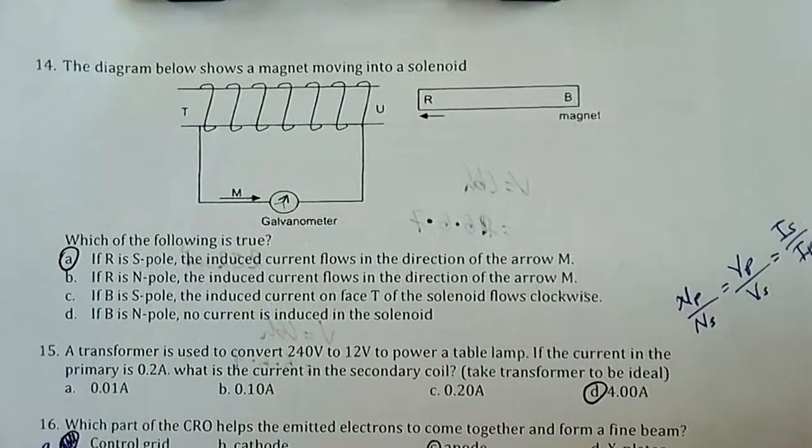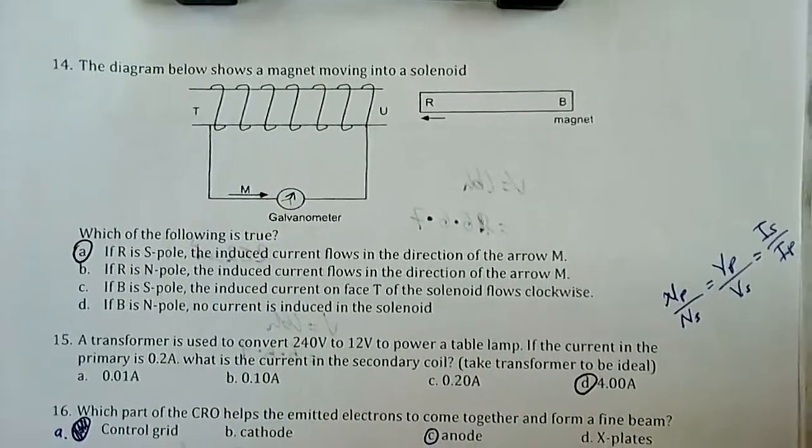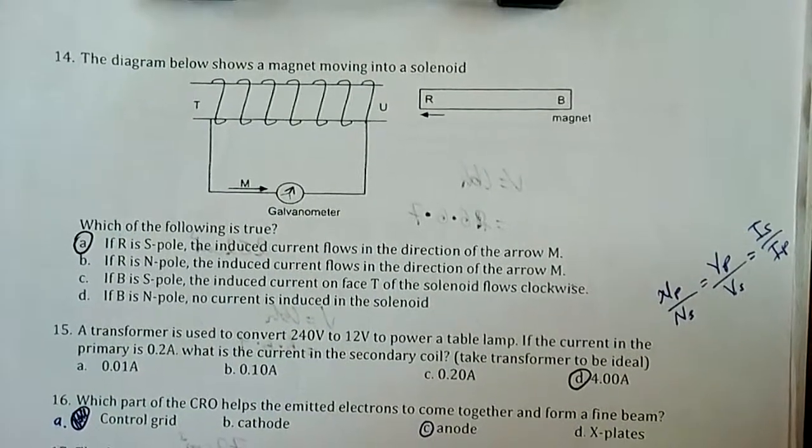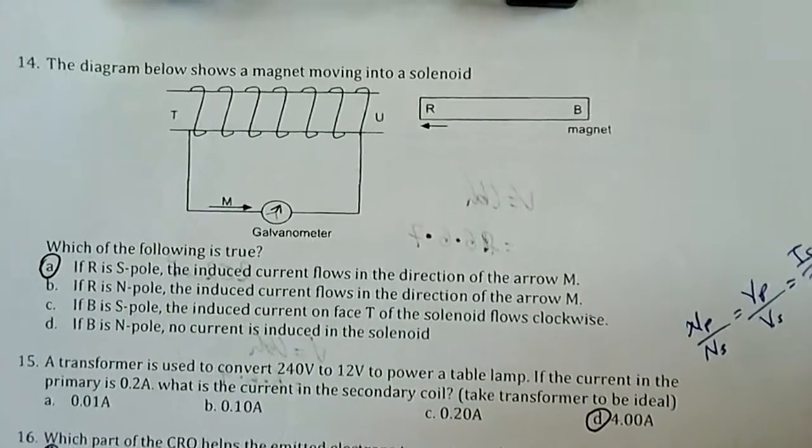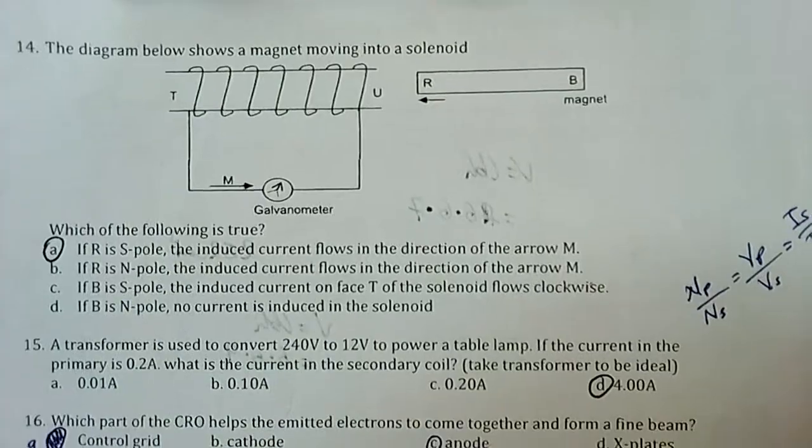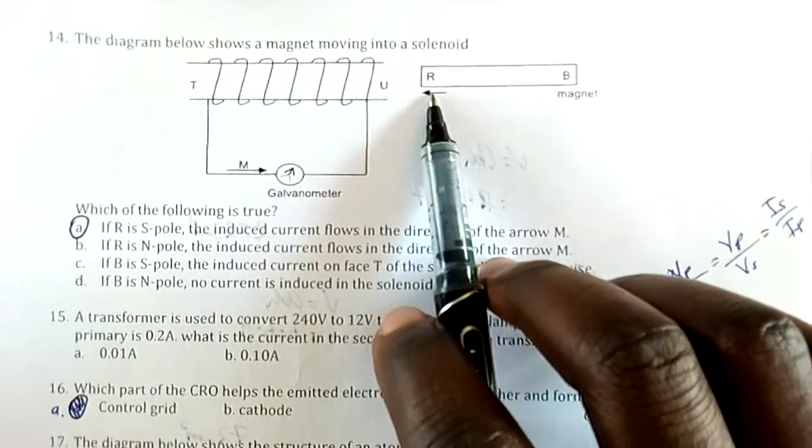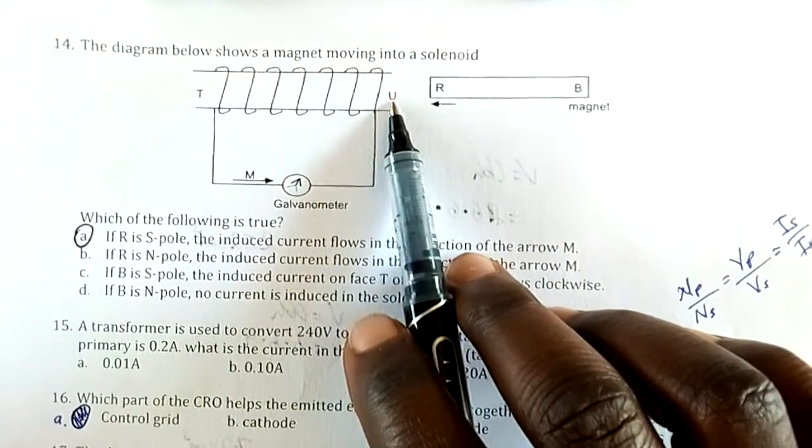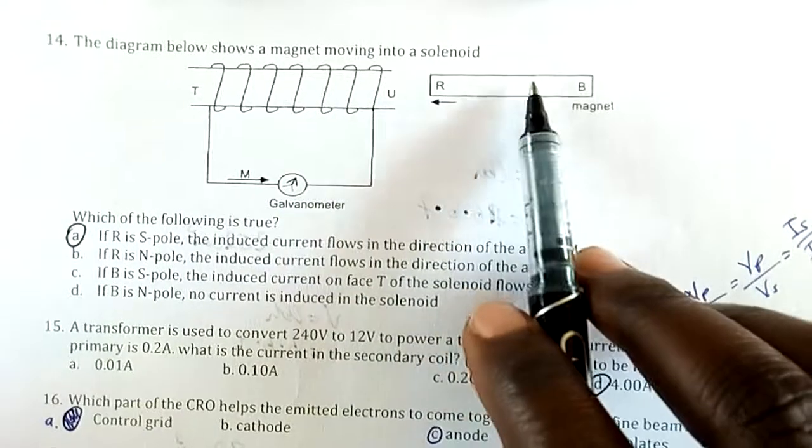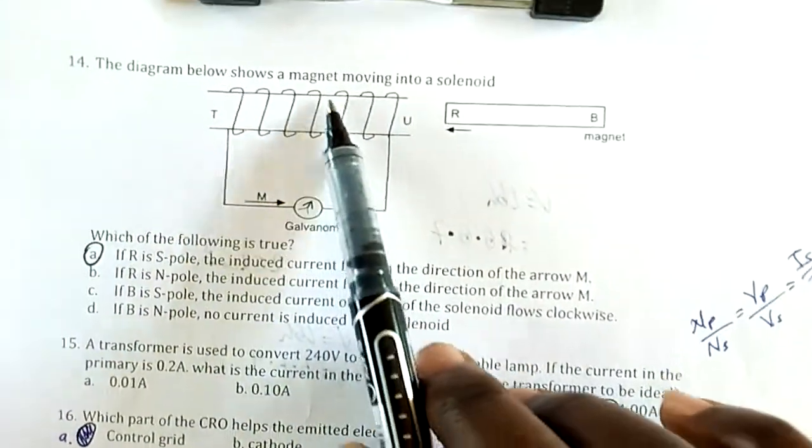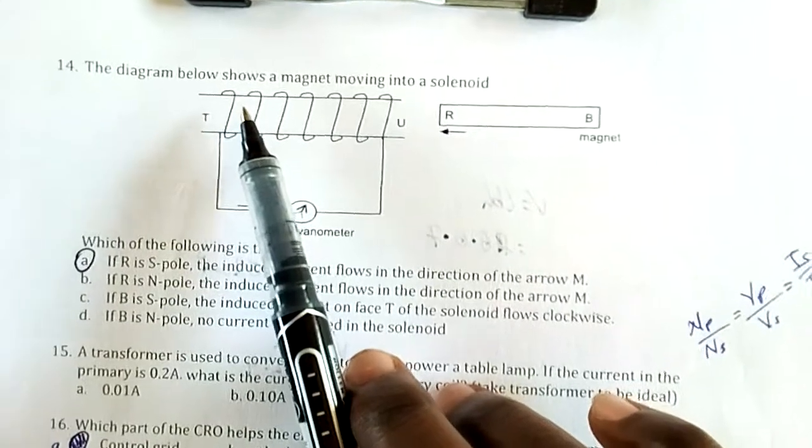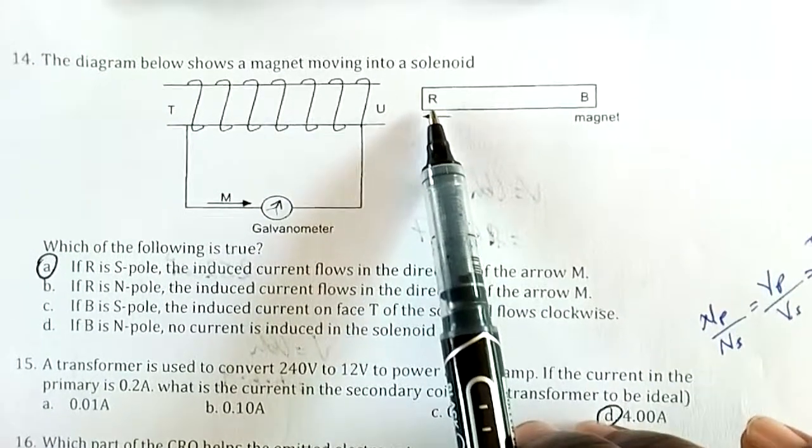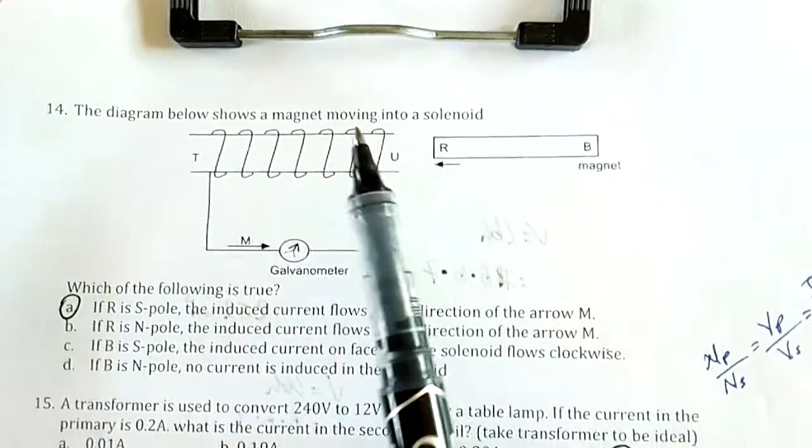Question 14: The diagram shows a magnet moving into a solenoid. Which of the following is true? My answer is A. If A is a south pole, the induced current flows in the direction of M. That is very true. If this is south and it's approaching the solenoid, then U will be south as well. An approaching magnet induces a magnetic field in the solenoid and also induces a current. When south is approaching, this will also be south.